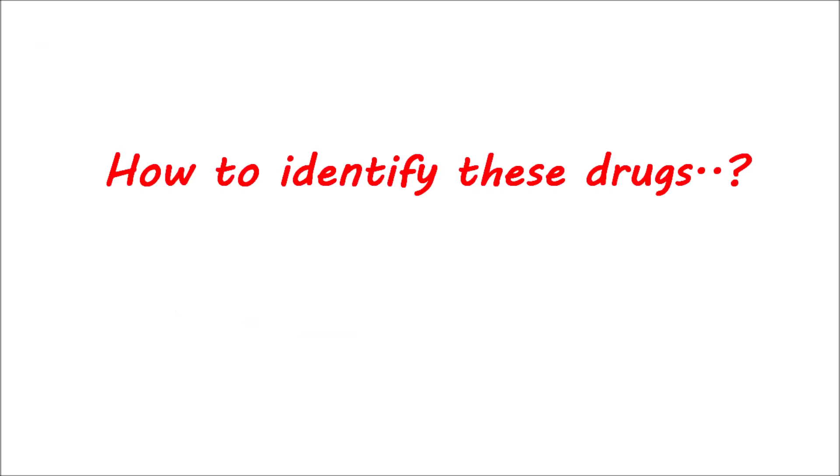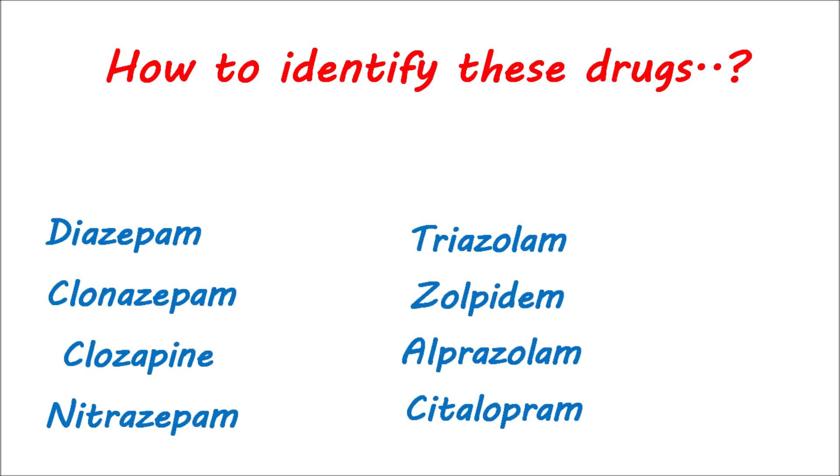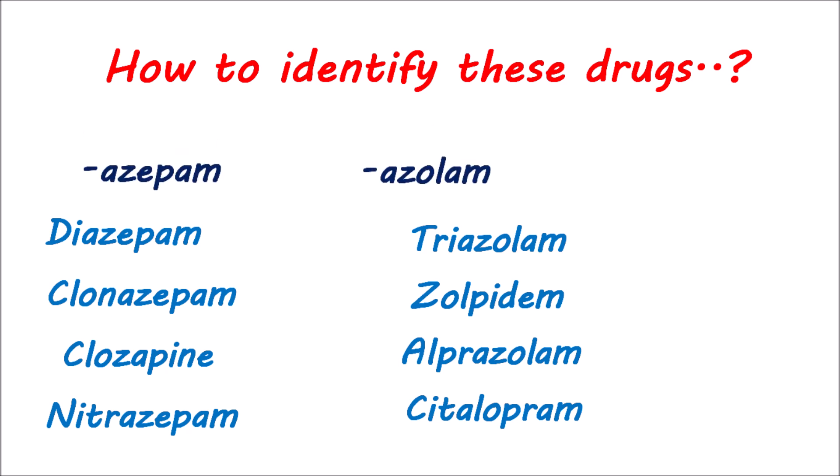But how can these drugs be identified? As we come across a wide number of drugs acting on the CNS, how can these benzodiazepines be identified or even differentiated from other drugs? These benzodiazepines can be recognized by two suffixes: one is -azepam and the other is -azolam.